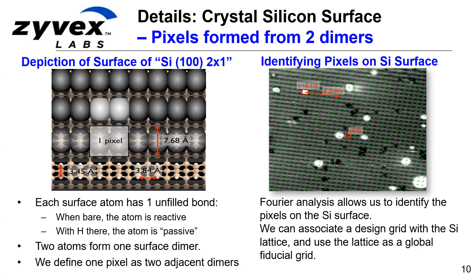The silicon-100 surface we work on dimerizes, making beautiful dimer rows — here's a stick figure of it. We do digital lithography with a sub-nanometer pixel made up of two dimers along a dimer row, or four surface silicon atoms, each with a hydrogen atom attached. We can image this at low currents and voltages where we don't break the silicon-hydrogen bond, and use it as a global fiducial grid to guide our lithography and control where we expose and remove hydrogen from the resist. You can see some defects in the STM image; vacancy defects and missing hydrogen atoms turn out not to be a significant problem.